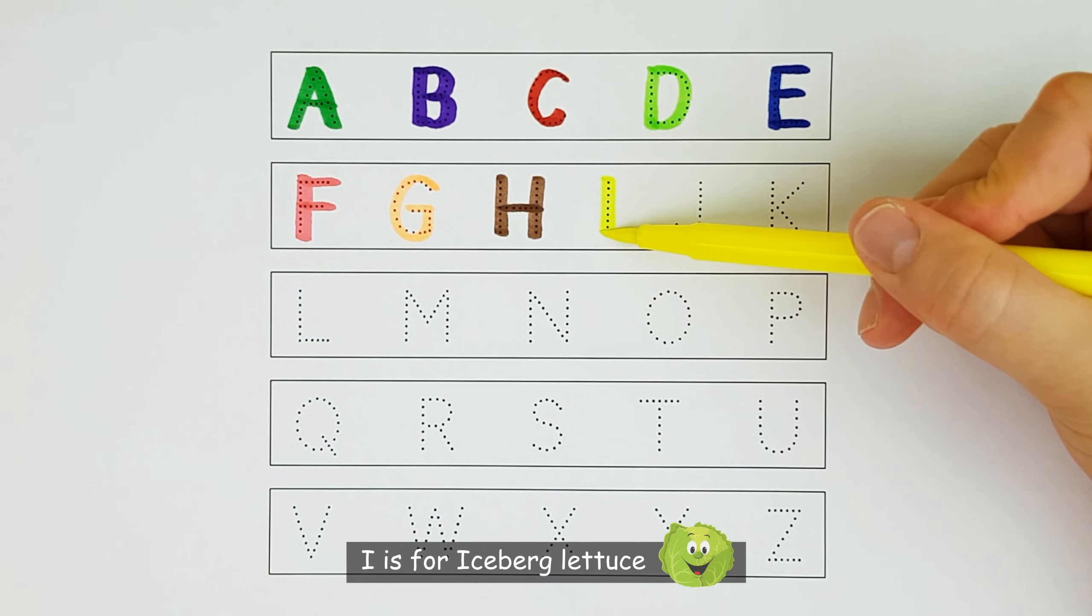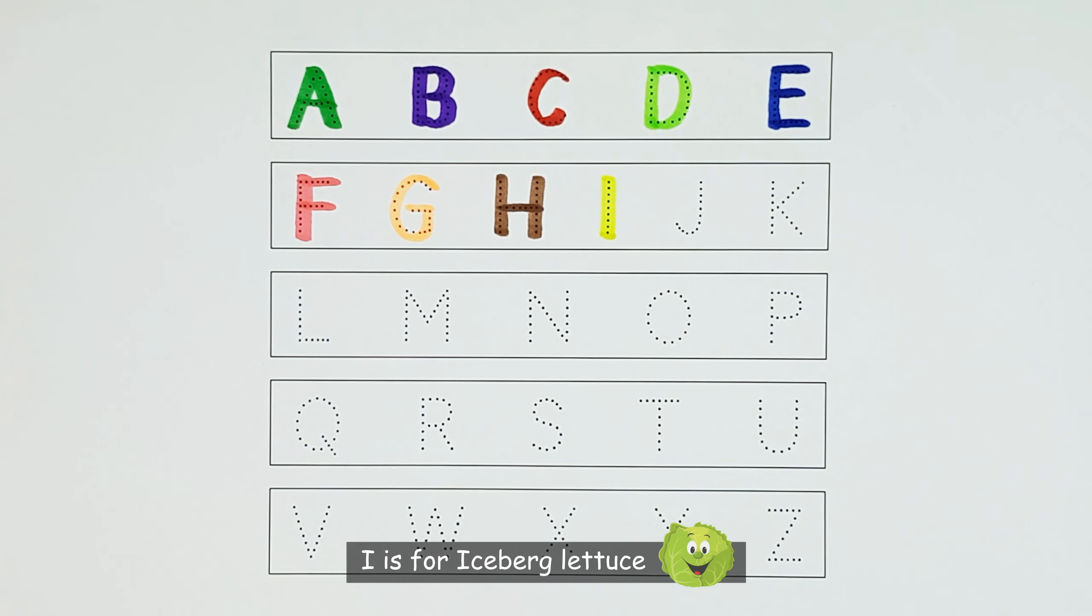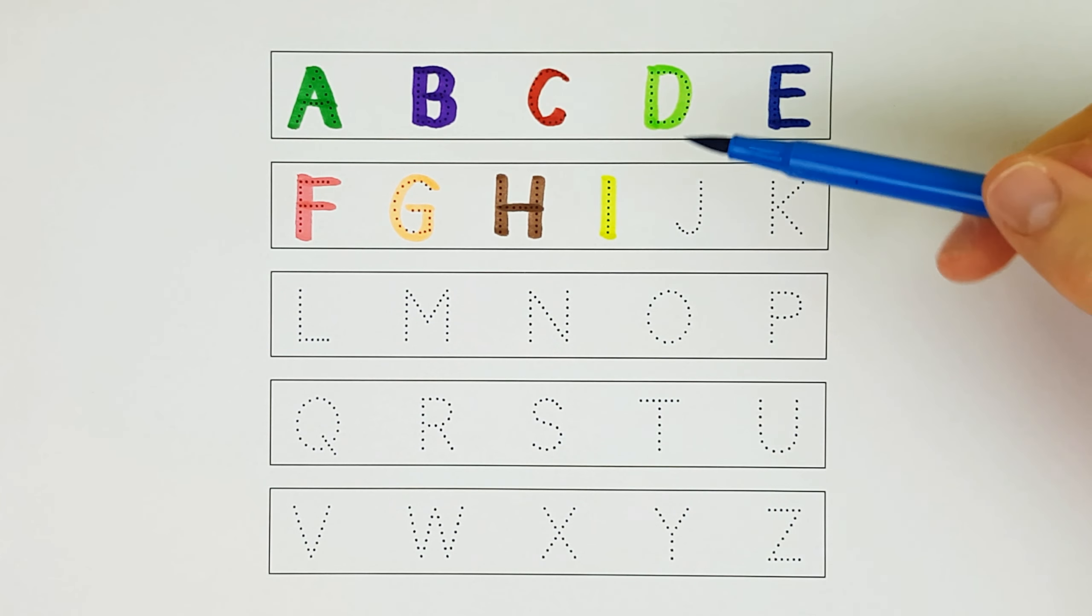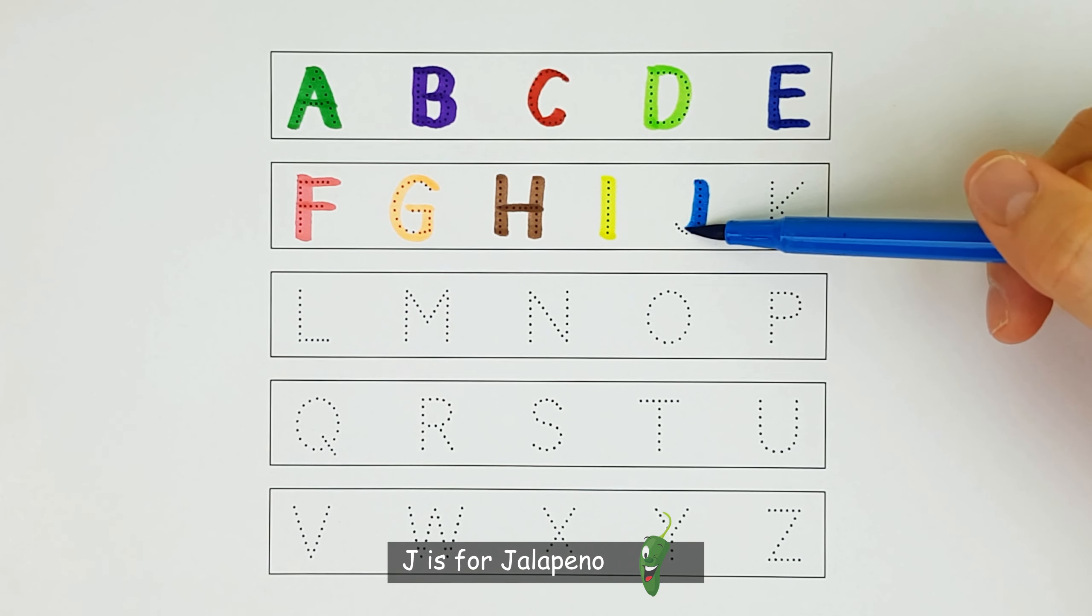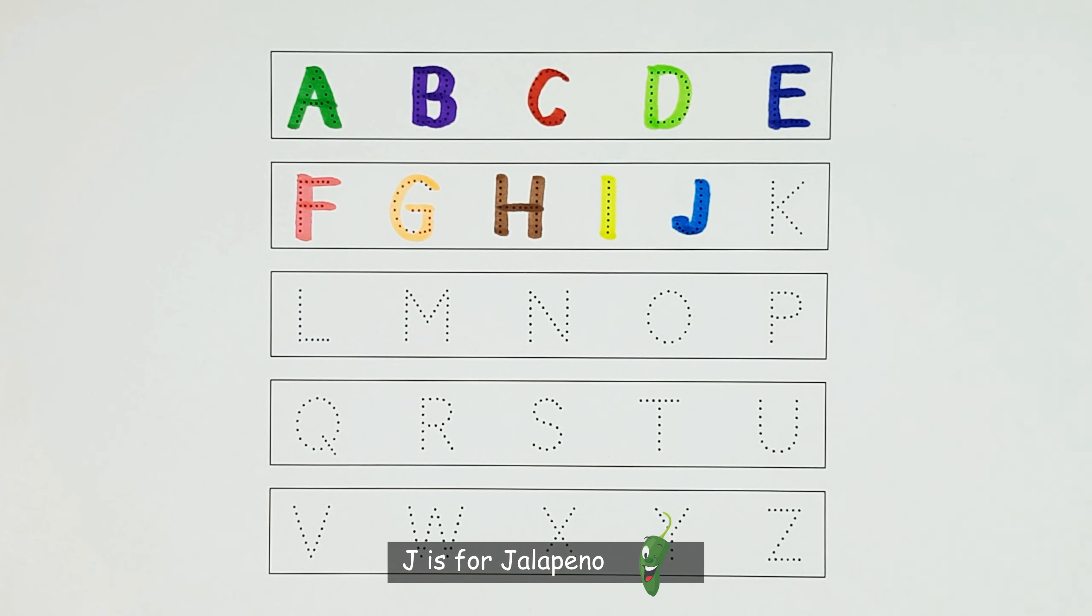I. I is for iceberg lettuce. J. J is for jalapeno.